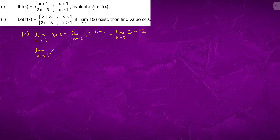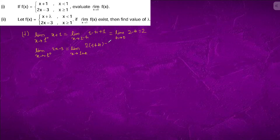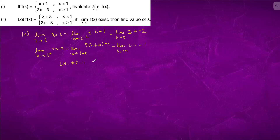Now limit x tending to 1 plus of 2x minus 3. This equals limit x tending to 1 plus h of 2(1 plus h) minus 3, which equals limit h tending to 0 of 2 minus 3, equals minus 1. So LHL is not equal to RHL, therefore the limit does not exist.